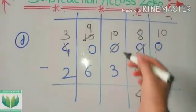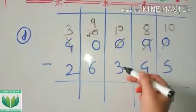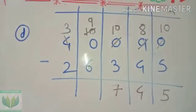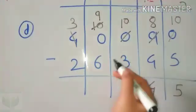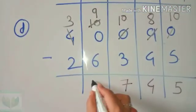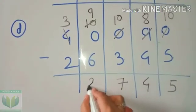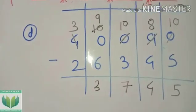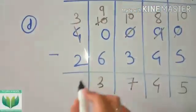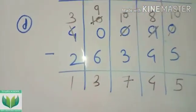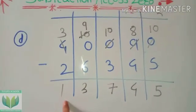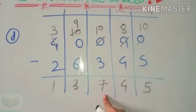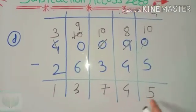Now 10 minus 3 is going — yes, answer 7. 9 minus 6 is 3. 3 minus 2 is 1. The answer is 13,745.